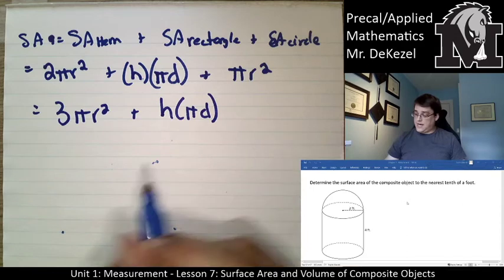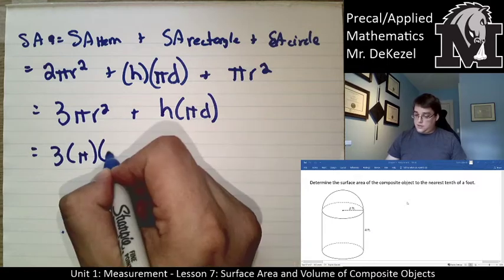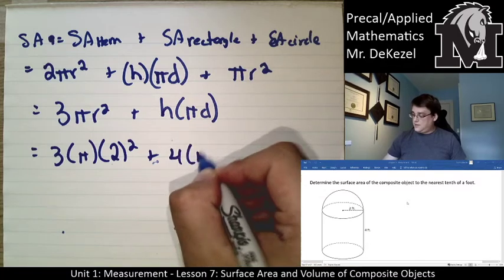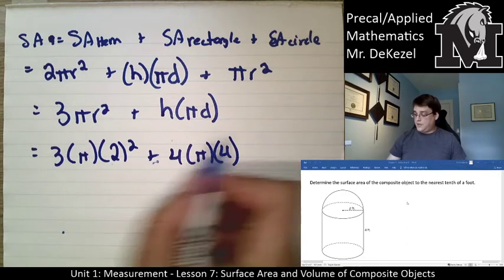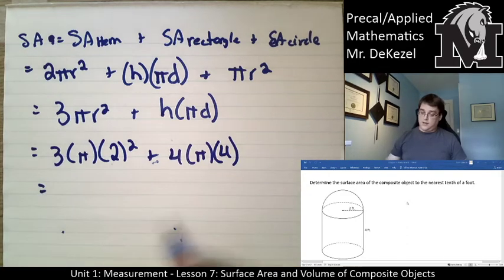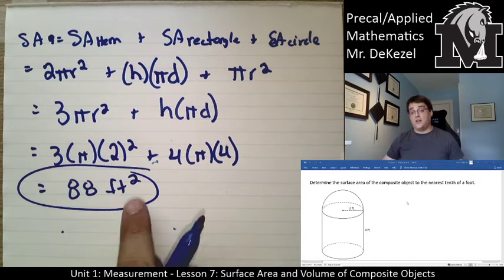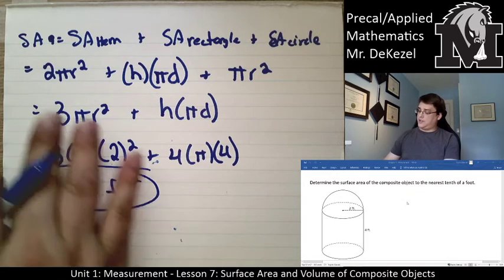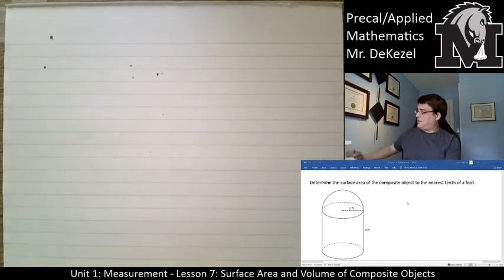Let's plug in those values. We have three times π times the radius squared — the radius is 2, so that's 2² — plus the height, which is given as 4 feet, times π times the diameter. If the radius is 2, the diameter is 4. Plugging that in, we can determine the surface area to be 88 feet squared. We're talking about surface area, so our unit is squared. We took the different portions, added them together, combined like terms, and got the final answer.